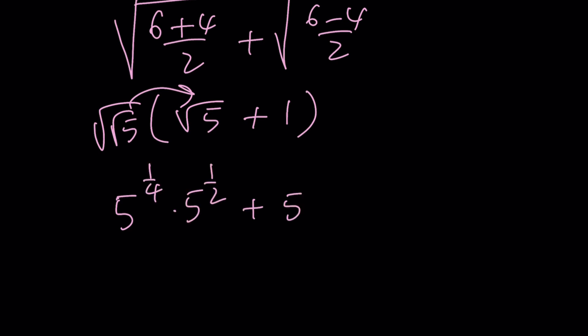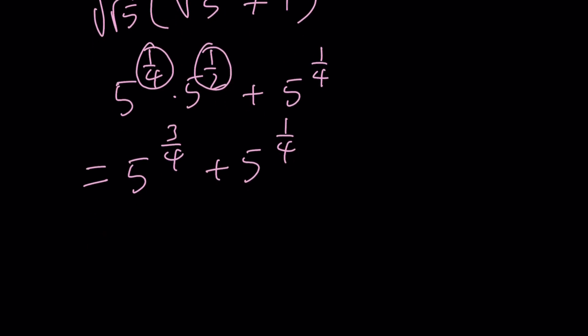If you add the exponent, you get 5 to the power 3 fourths plus 5 to the power 1 fourth. And now you can write this as a sum of two radicals that don't contain radicals. So it'll be denested. How? This is going to be the fourth root of 125 plus the fourth root of 5. And that will be the answer.